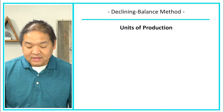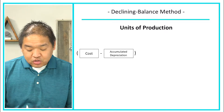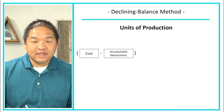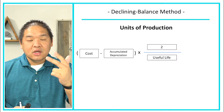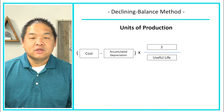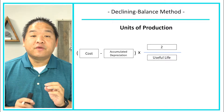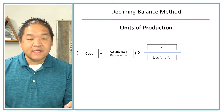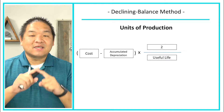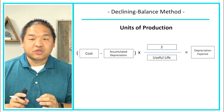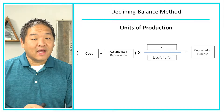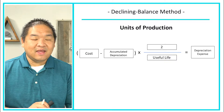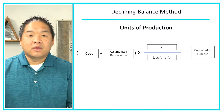To apply the declining balance method, we take the cost and subtract accumulated depreciation — notice we are not subtracting residual value — and then multiply by two divided by useful life. The two represents 200 percent; if asked to calculate at 150 percent, use 1.5 instead of two. So: cost minus accumulated depreciation, times two divided by useful life, equals depreciation expense.